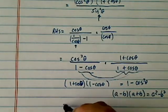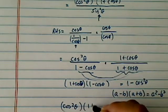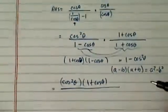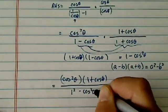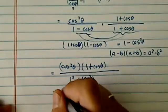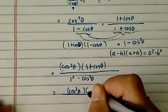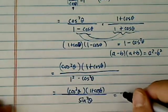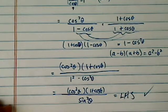Okay, so if I do that, then I have cosine squared theta on top multiplied by 1 plus cosine theta. And then on the bottom I would have 1 squared minus cosine theta squared. And this one is actually using the identity. So on the bottom I have sine squared theta, which happens to be equal to the left hand side. Okay, so that's what completes the proof.